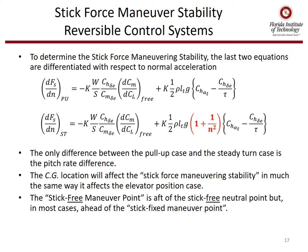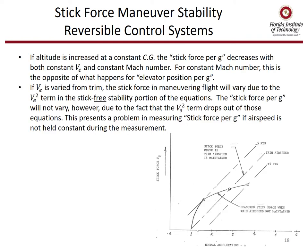CG location affects stick force maneuvering stability in much the same way it affects the elevator position case. The stick-free maneuver point is aft of the stick-free neutral point, but in most cases ahead of the stick-fixed maneuver point. Let's examine the effects of altitude: if altitude is increased at constant CG, the stick force per G decreases with both constant equivalent airspeed and constant Mach number. For constant Mach number, this is the opposite of what we saw with the elevator position per G.